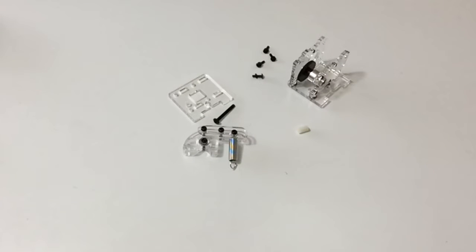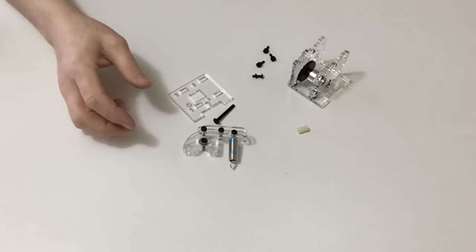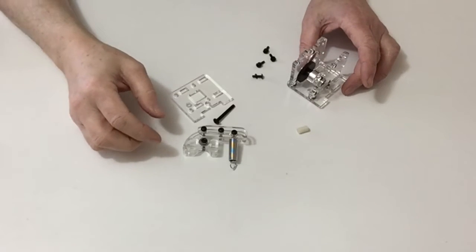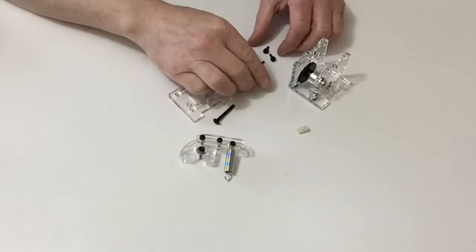In stage 52, we're going to be putting together the extruder arm and drive assembly. Gather all the parts from this stage, the drive unit from the previous stage, and the extruder arm.